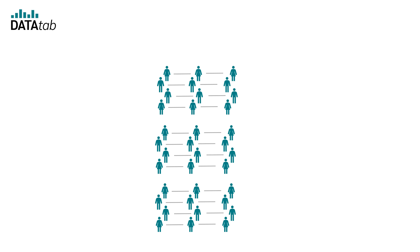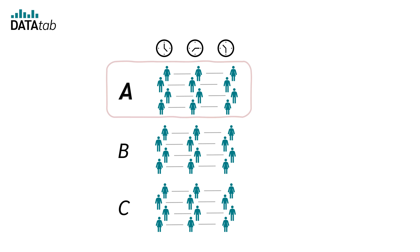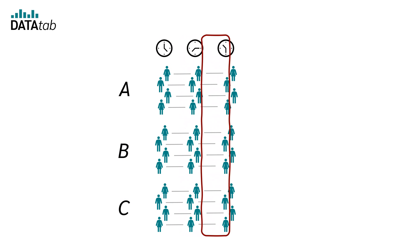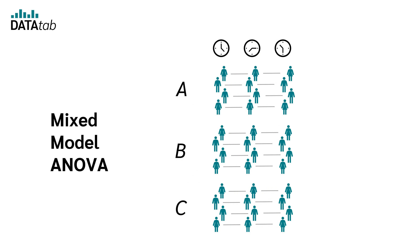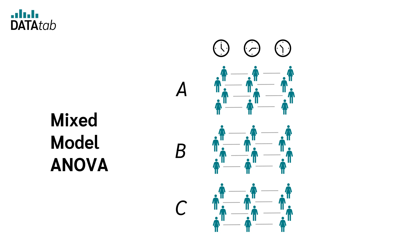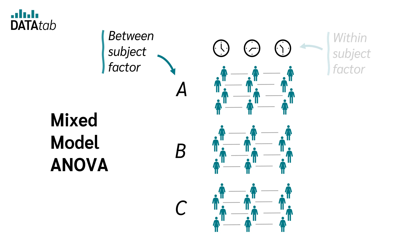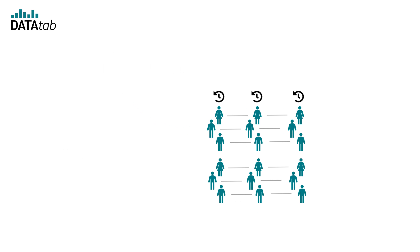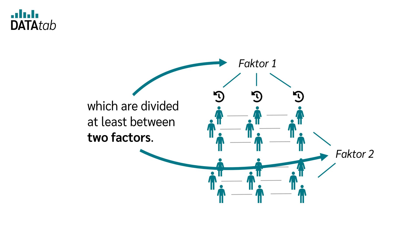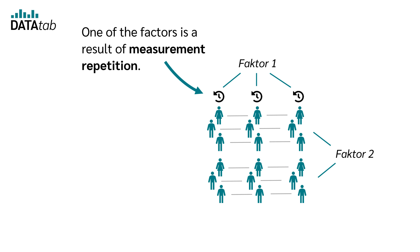But what if we want to test if there is a difference between diets A, B, and C over the different time points? Then we need a mixed model ANOVA, because we have both one between-subjects factor and one within-subjects factor. In a mixed model ANOVA, we have at least one between-subjects factor and at least one within-subjects factor in the same analysis. It tests whether there is a difference between more than two samples divided across at least two factors, where one of the factors is a result of measurement repetition.